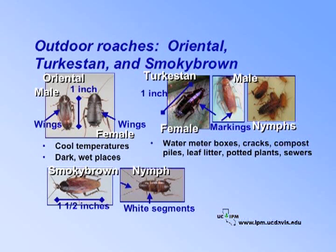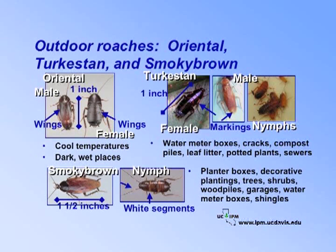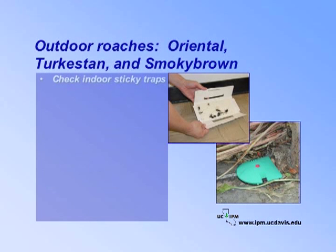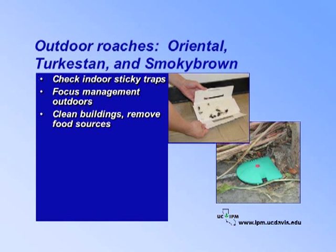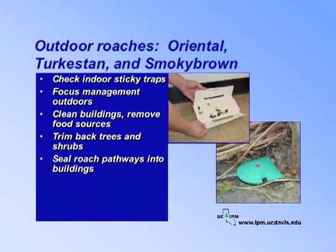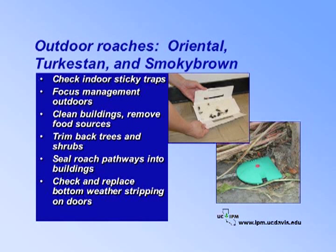The smoky brown cockroach is about one and a half inches long and dark brown. Nymphs have white segments on their antennae and backs. This species is found in planter boxes, decorative plantings, trees, shrubs, wood piles, garages, and water meter boxes. They are sometimes found in shingles or indoors in attics. Routinely check sticky traps indoors for invasions of these large outdoor roaches. If you find these species indoors, focus management efforts outdoors. Keep buildings as clean as possible and remove food sources. Trim back trees or shrubs. Seal roach pathways into buildings. Check and replace bottom weather stripping on doors. And bait outdoors near cockroach hiding places.